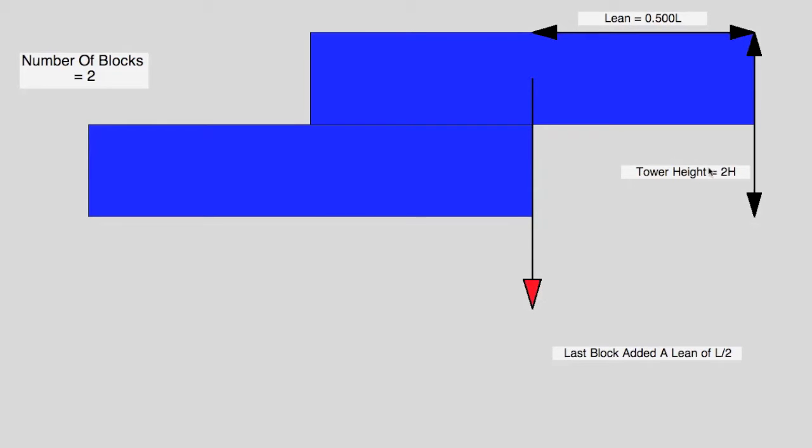So if we put that brick there, we get a tower height of 2, we get a lean of half the length of the bricks, and here this tells you what the last brick added, so this last brick added a lean of a length over 2, and the number of blocks is up here.